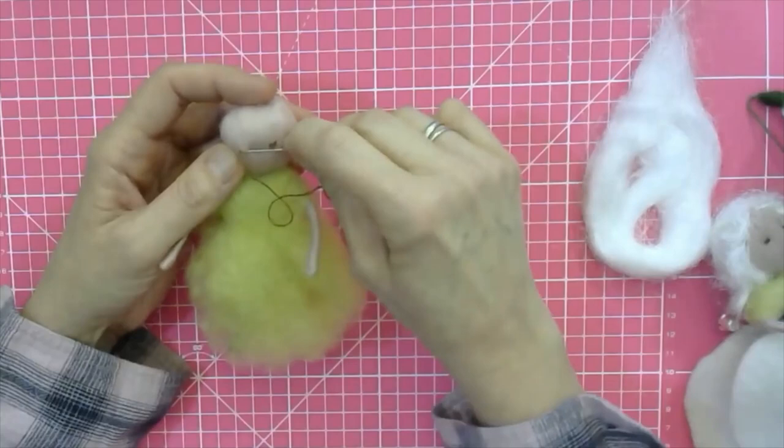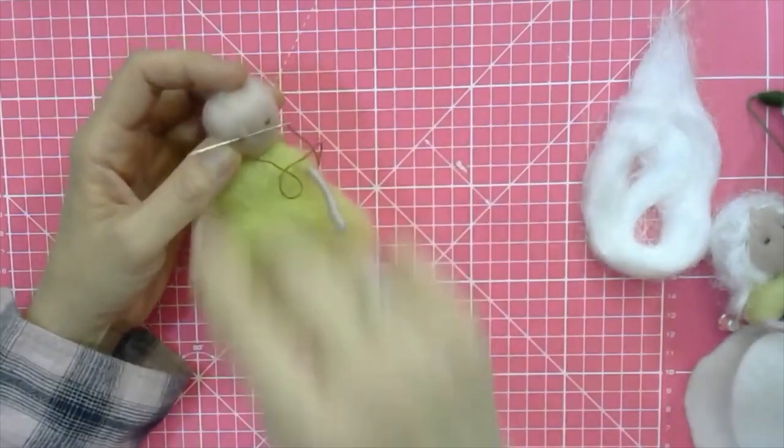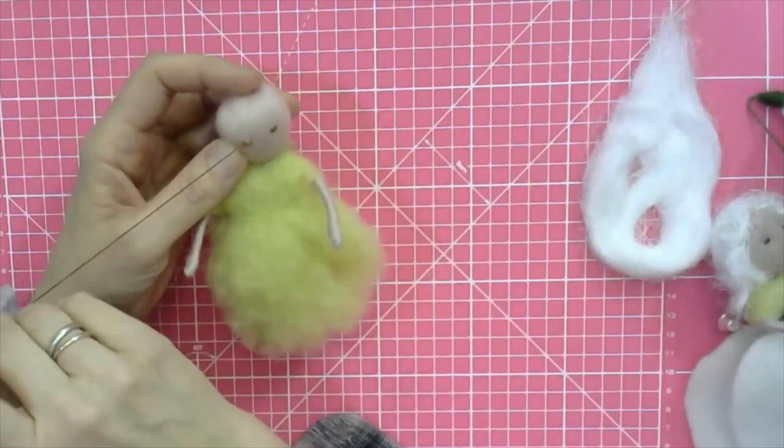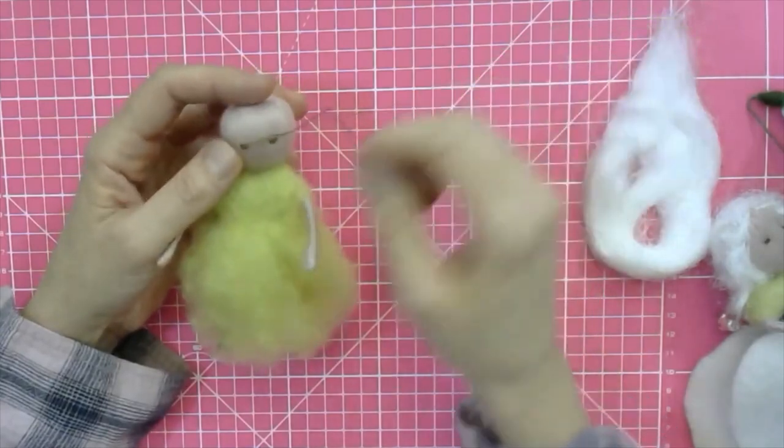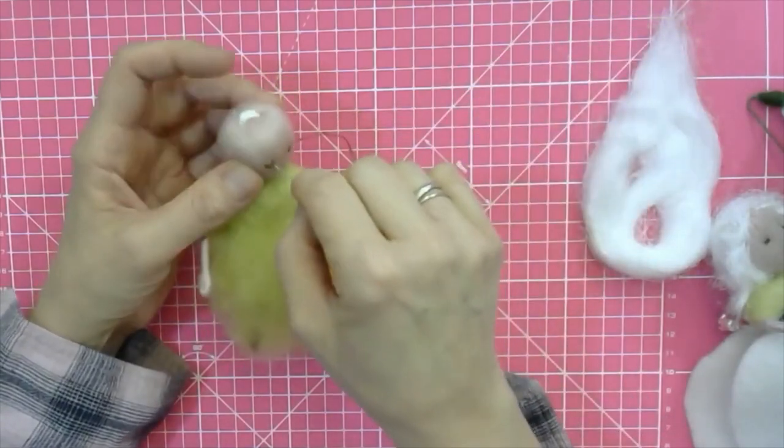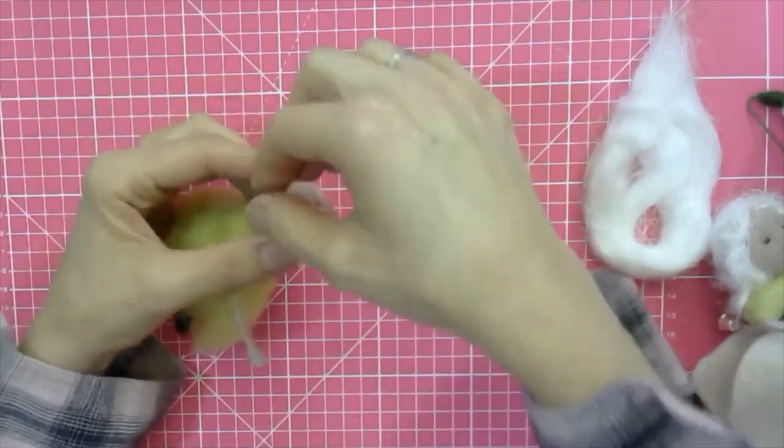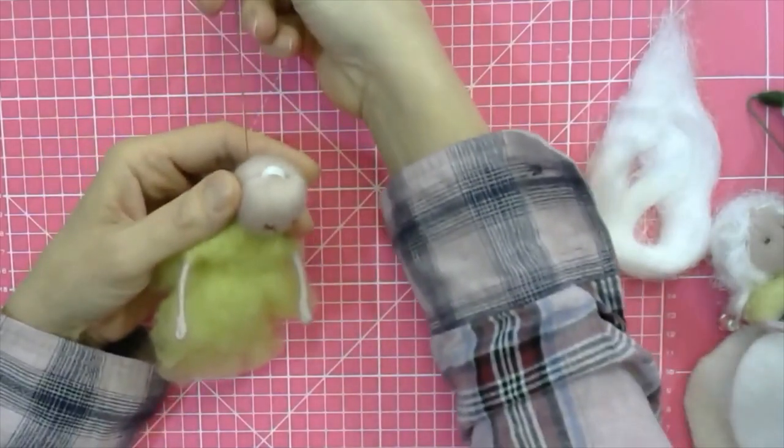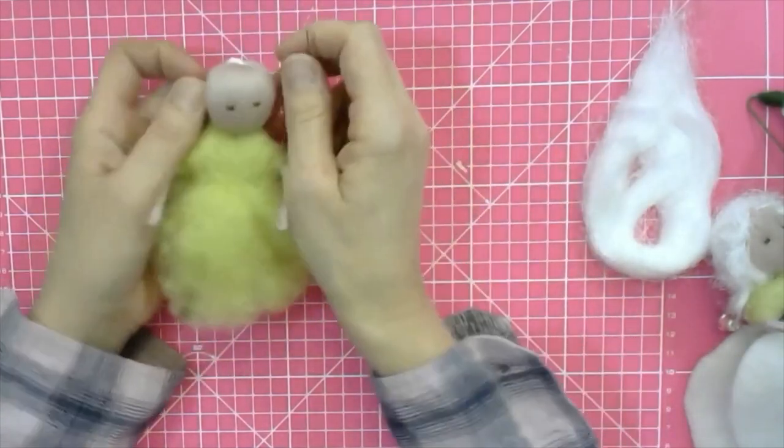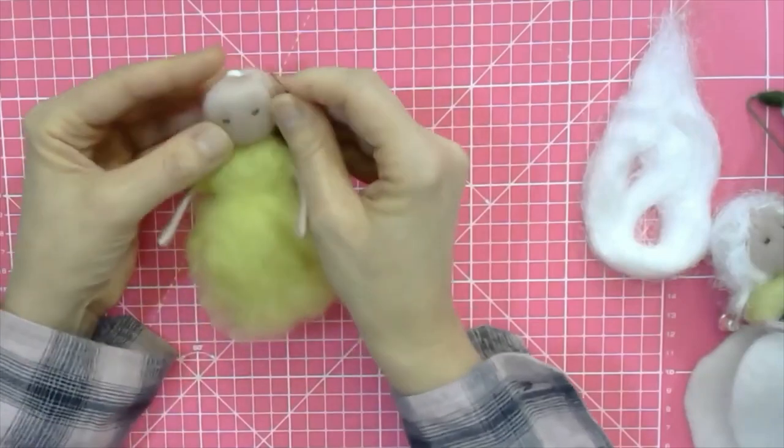So I've doubled my thread up. If you do this with a single thread, then you have to do more stitches obviously. Once you've got two eyes looking the same or as same as you can, go back out through the back, making sure that you're not having any funny business going on with the loops here. Then you secure the thread again, same way as you started out.